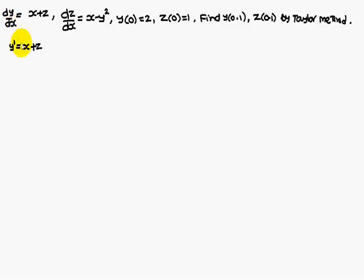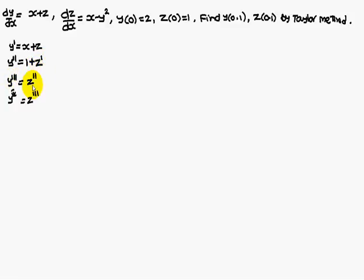Therefore, y dash is nothing but x plus z, as given. The second differentiation is: x differentiation is 1, z differentiation is z dash. Similarly, the third differentiation is z double dash, and the fourth differentiation is z triple dash.